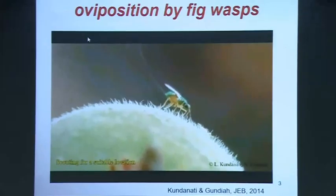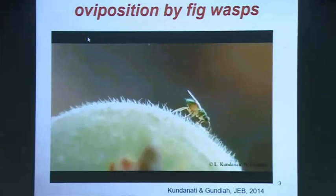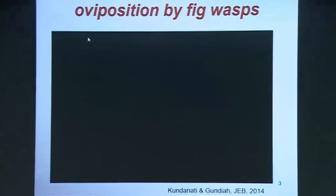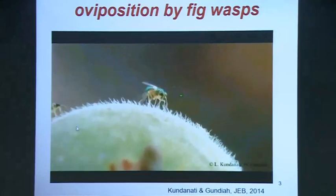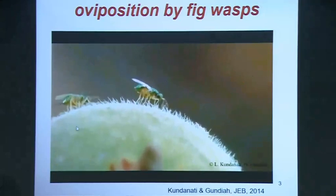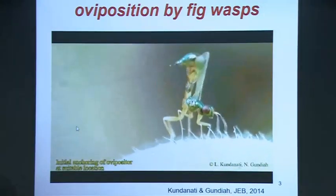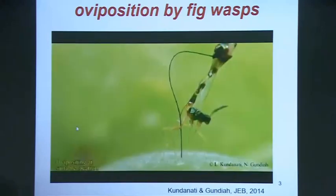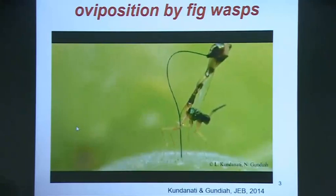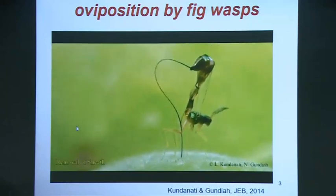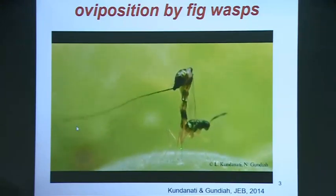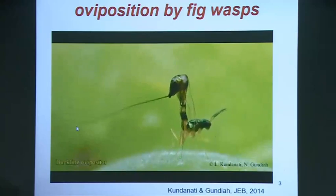What we saw there was oviposition, not by the pollinator that Professor Ganesha talked about, but by a parasitoid. This is a female — rightly said, she's working very, very hard. She's trying to figure out what's a good substrate to lay her eggs. She's identified a location with certain chemicals or other stimuli, and she starts pushing the ovipositor inside.